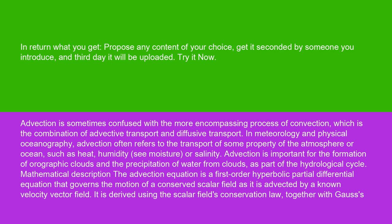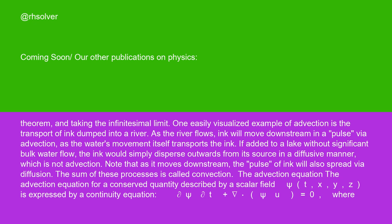Mathematical description: the advection equation is a first-order hyperbolic partial differential equation that governs the motion of a conserved scalar field as it is advected by a known velocity vector field. It is derived using the scalar field's conservation law, together with Gauss's theorem, and taking the infinitesimal limit.